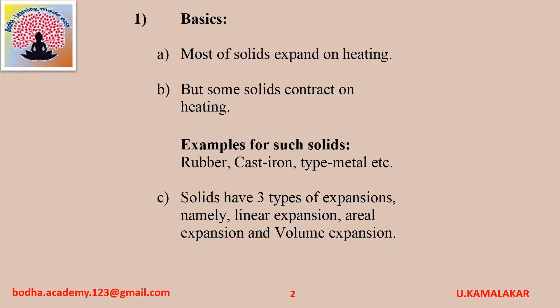Most of the solids expand on heating but some solids contract on heating. Examples of such solids: rubber, cast iron, type metal etc. Solids have three types of expansions, namely linear expansion, aerial expansion, and volume expansion.